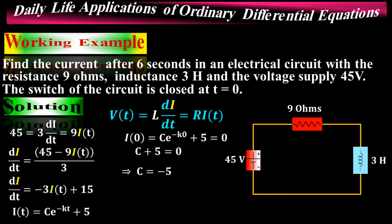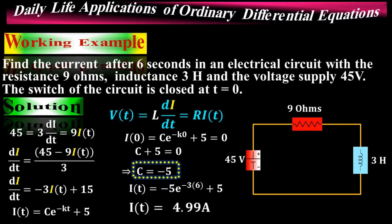To find the current after six seconds, substitute t equals 6 and C equals negative 5 into the solution. Simplifying the equation gives I(t) approximately equal to 4.99 amperes. This is the current after six seconds in the electrical circuit.